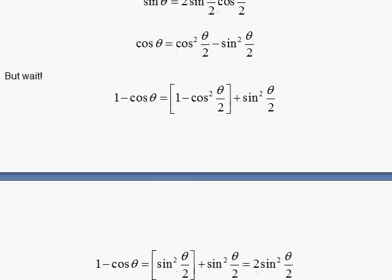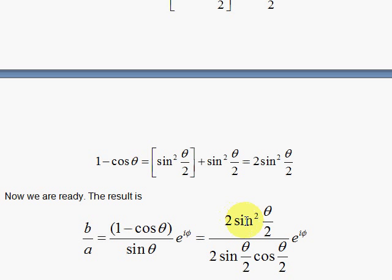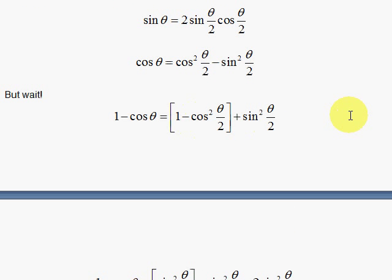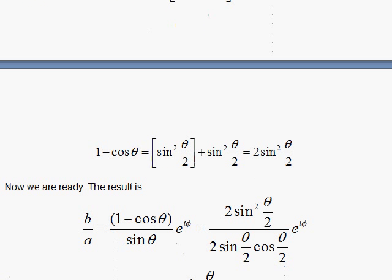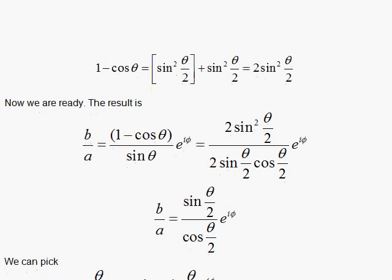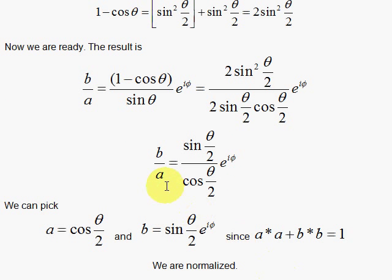We replace the bottom — the sine of theta — with 2 times the product of the half angles. When we do that, the b over a is found with one of the sine of theta over 2 terms canceling. So b over a is essentially a tangent of theta over 2. Leaving it in this form, a equals cosine of theta over 2 and b equals sine of theta over 2 times the exponential e to the i phi.